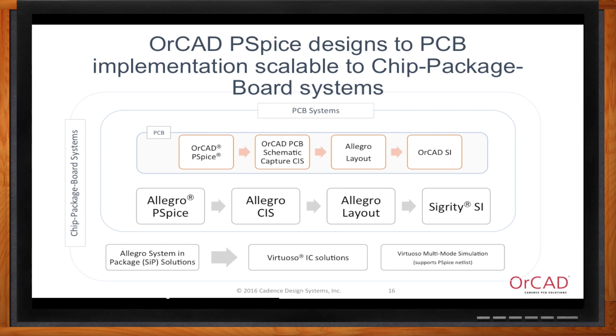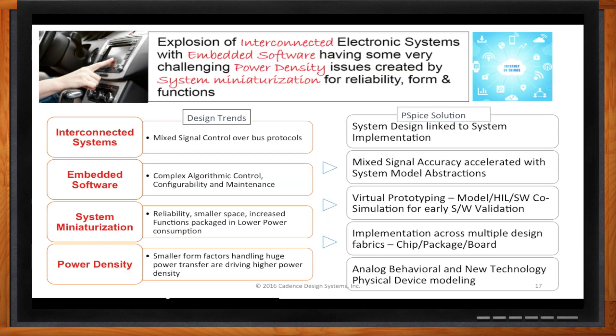Parag, we've covered a lot here today. Can you give me a little wrap-up of your key points? Sure. There's a significant amount of explosion in interconnected systems — whether you're looking at IoT, healthcare, or automotive — it's all about power, miniaturization, embedded software, and interconnected systems with analog and mixed signal control. We are seeing many places where a system design in P-Spice is being used to target and drive Cadence's IC design implementation. All of these trends in electronic systems are being addressed by what Cadence's macro-level strategy provides.